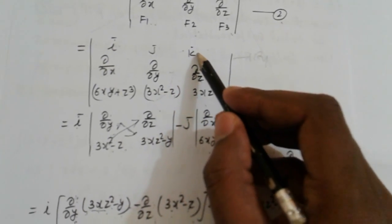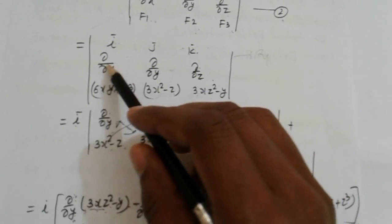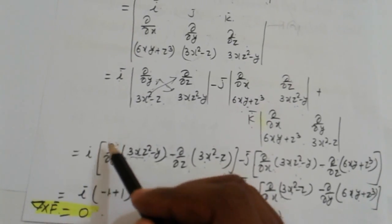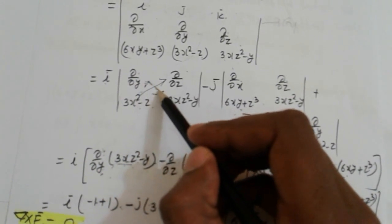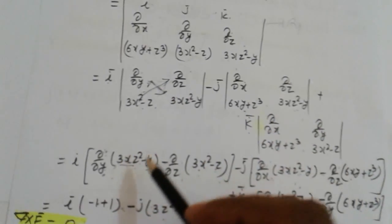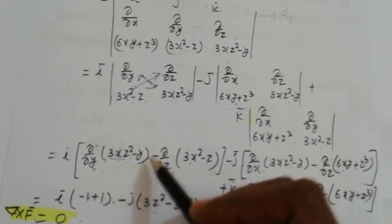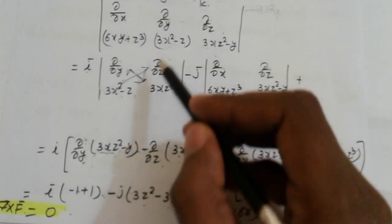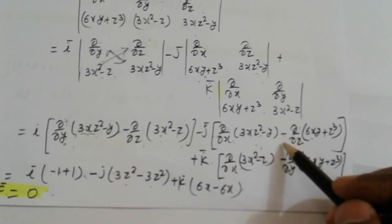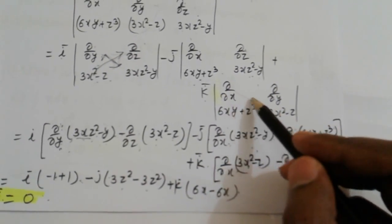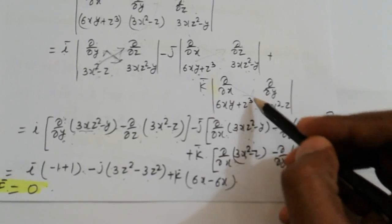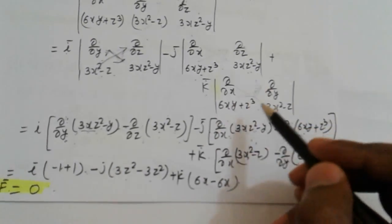Now expand each term. For i: the product of the principal diagonal minus the other diagonal gives (del/del y)(3xz² - y) minus (del/del z)(3x² - z). For minus j: write the second determinant similarly. For plus k: write the third determinant as the product of diagonals.